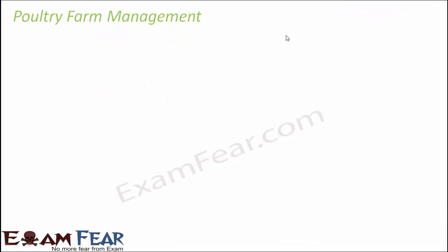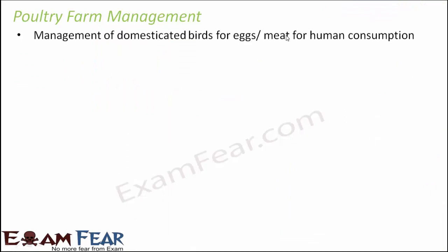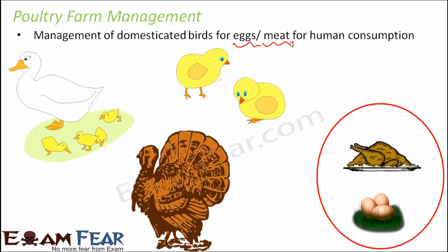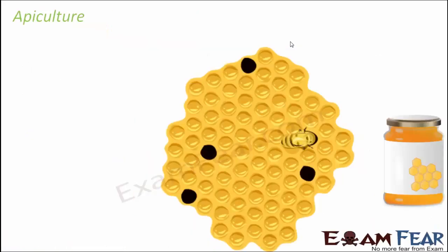Poultry farm management involves the management of domesticated birds for eggs or meat for human consumption. Eggs and meat are very commonly consumed by human beings. Birds like ducks, chickens, and turkeys are kept in cages, given food on time, cleanliness is maintained, and it is ensured they are disease-free. In return they give us eggs, and many times the birds themselves are also eaten, such as younger chicks.